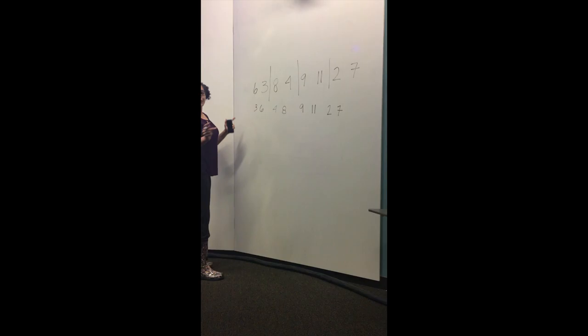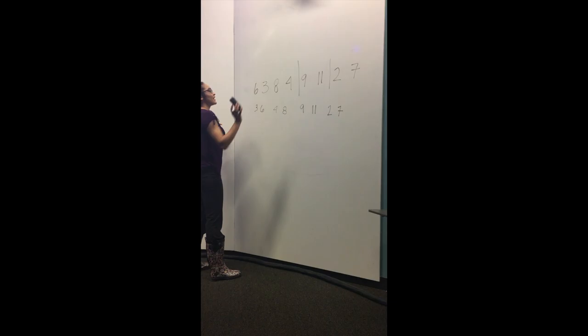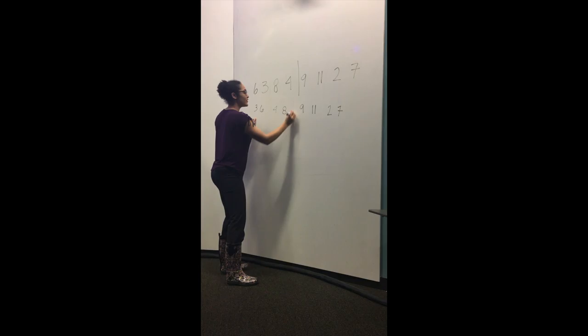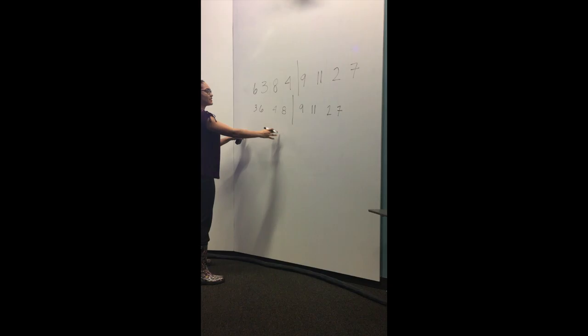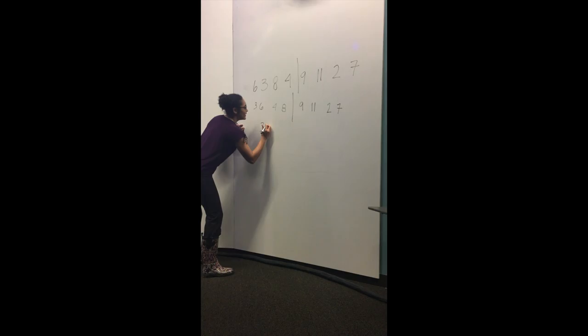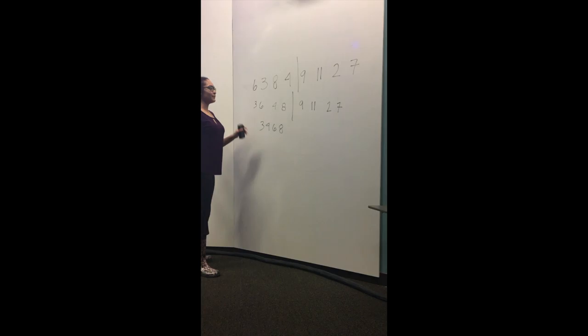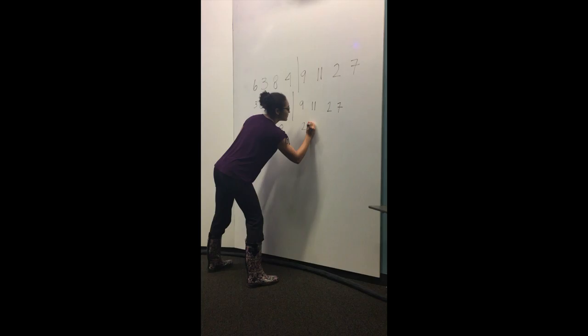So by merge sort, the groups double, and they merge two of the groups together to make groups of four. So these two groups will be a group, and these two will be a group. And you sort these in this group. So this one will end up being three, four, six, and eight. And then you sort this part. This ends up being two, seven, nine, and eleven.